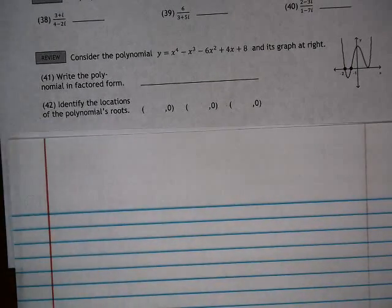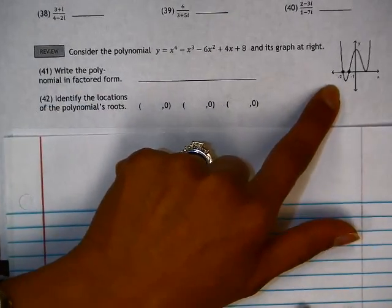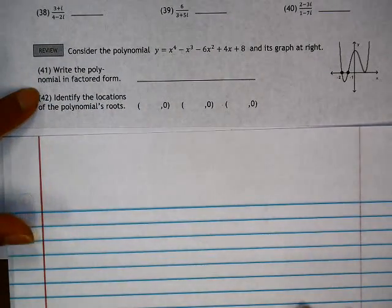Okay, we're going to do 41 and 42. Given this polynomial and the graph of the polynomial, write the polynomial in factored form.